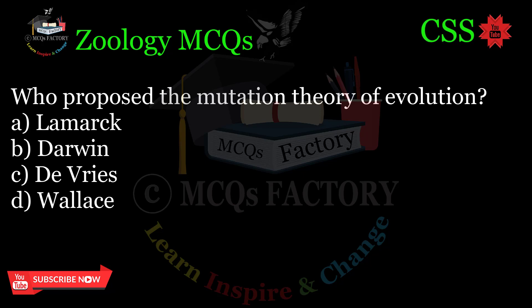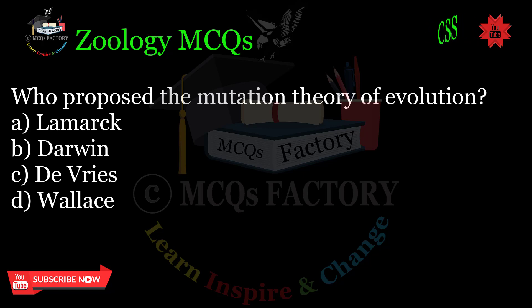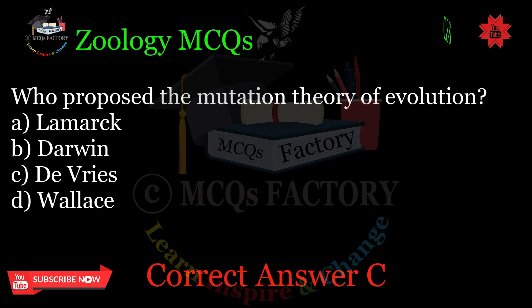Who proposed the mutation theory of evolution? A. Lamarck. B. Darwin. C. DeVries. D. Wallace. Correct answer: C.